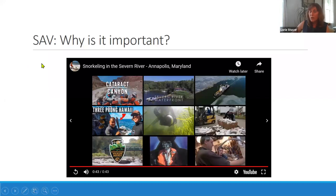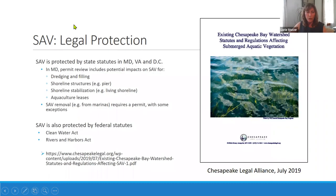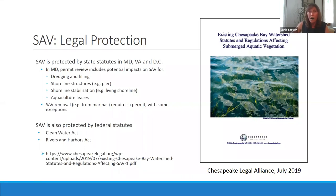Recognizing those valuable functions, it's not surprising that SAV has legal protection. For Chesapeake Bay, there are laws on the books in Maryland, Virginia, and the District of Columbia protecting SAV. You are required to have a permit review for impacts on SAV if you want to do any dredging and filling, shoreline structure construction, shoreline stabilization including living shorelines, or aquaculture leases. SAV is also protected by federal statutes. The document shown here summarizes the legal protections for SAV and is a roadmap in case you're thinking of doing anything that might impact SAV.